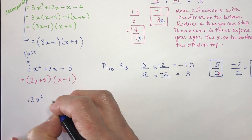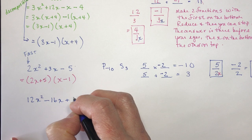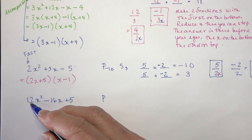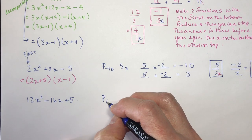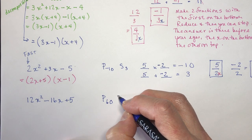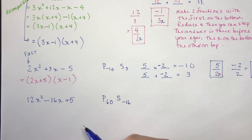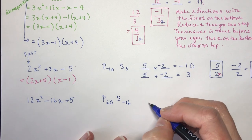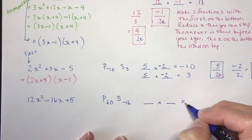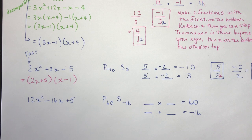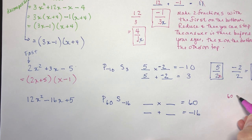Let's try another one: 12x squared minus 16x plus 5. What is my product? Product of the first and the last — what's 12 times 5? 60. Sounds like a big number. Sum of the one in the middle — the sum is minus 16. Now if you get really big numbers here, you might want to check if you missed a common factor first. So we've got something times something equals 60, and those same two numbers have to add up to negative 16. What multiplies to 60? You can start listing: 1 and 60, 2 and 30, 3 and 20.